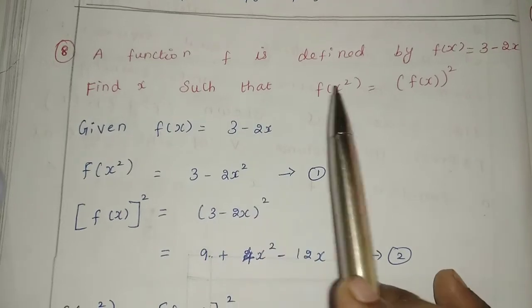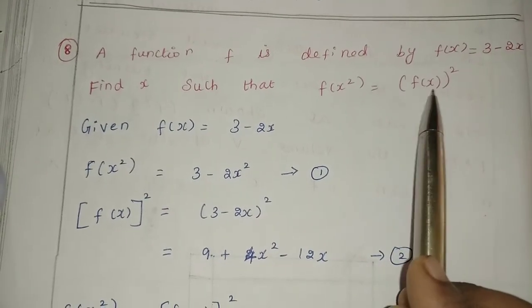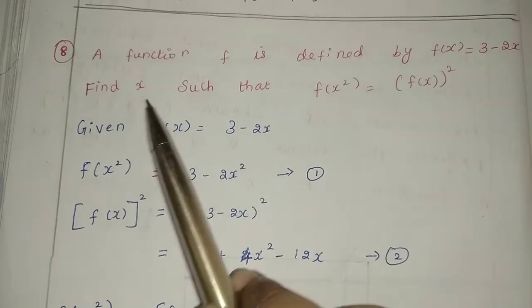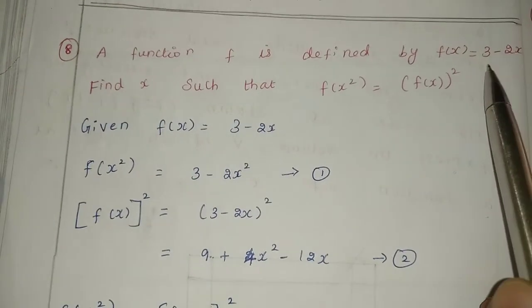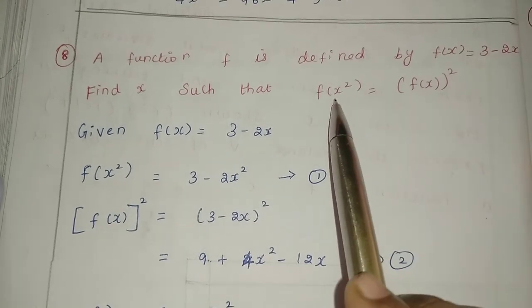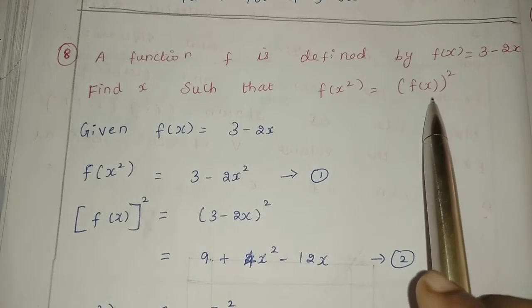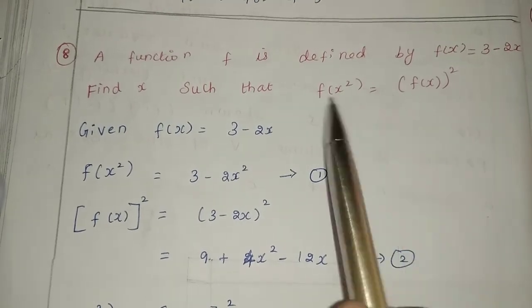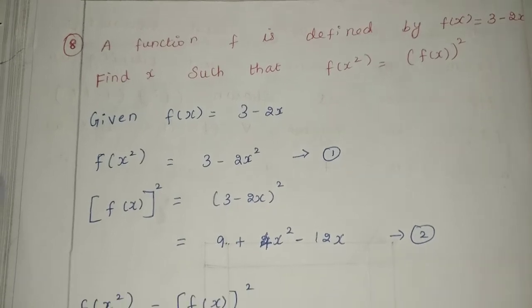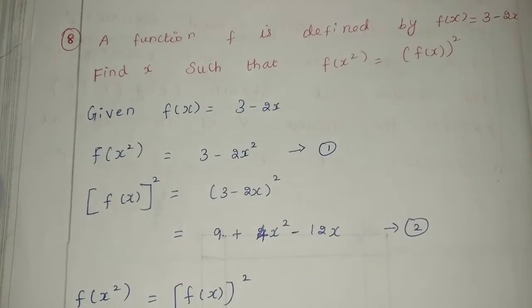Find x such that f of x squared equals f of x the whole square. We will do x values and f of x values carefully. Given: f of x is 3 minus 2x.